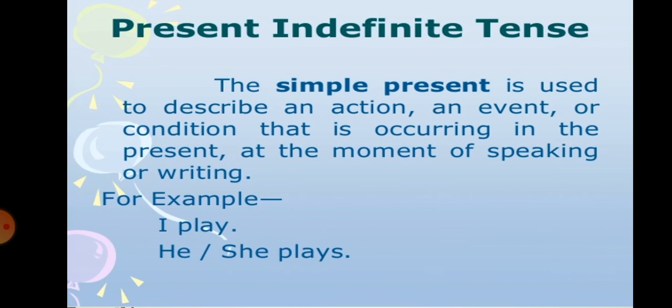Let's first start understanding that in English grammar, we have 12 tenses and we are learning the first one, the present indefinite tense. The simple present is used to describe an action or event or condition that is occurring in the present at the moment of speaking or writing. For example, I play, he or she plays.